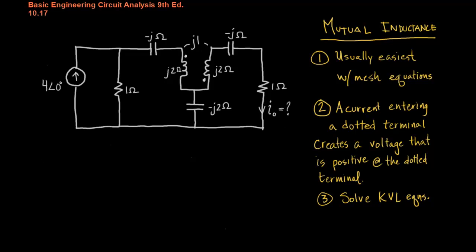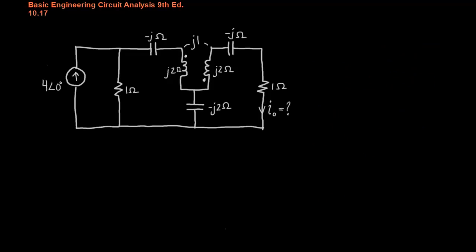Okay, so let's go ahead and apply that. We'll start by defining our meshes, I1, I2, and I3. Let's notice that I3 is equal to I0, so when we solve the mesh equations, we'll have our answer. Let's also recognize that I1 is simply 4∠0°. And with that, we'll go ahead and apply KVL.